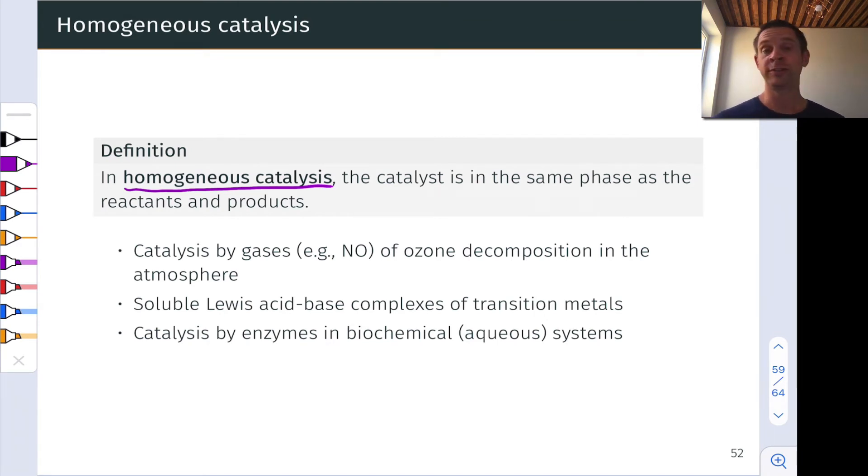Soluble Lewis acid-base complexes of transition metals are common homogeneous catalysts in reaction solutions. And catalysis by enzymes in biochemical systems happen in aqueous solutions, the aqueous solutions of cells, for example, the cytosol. And so, these are homogeneous catalysts as well.